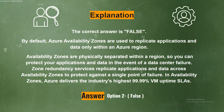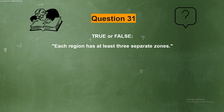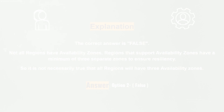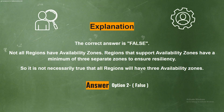Question 31. True or False? Each region has at least three separate zones. The correct answer is Option 2, False. Not all regions have Availability Zones. Regions that support Availability Zones have a minimum of three separate zones to ensure resiliency, so it is not necessarily true that all regions will have three Availability Zones.